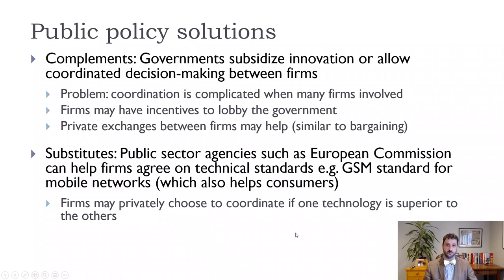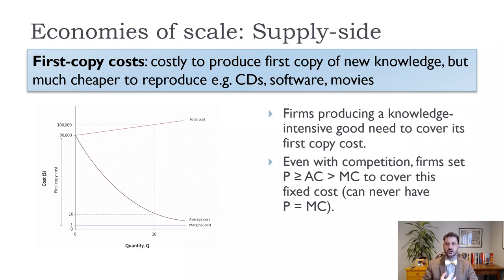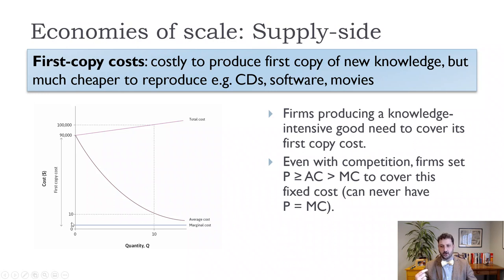Another issue is economies of scale, where there's a large fixed cost of innovation — what we can call first-copy costs. This is especially important in the digital world. When we think about digital music, books, software, or movies, there's a big fixed cost to producing the song, software, or movie. But because of the digital world, the marginal cost is very low — that's what this graph shows: a large fixed cost, a marginal cost of just one (the blue line), and an average cost that decreases across basically all quantities.